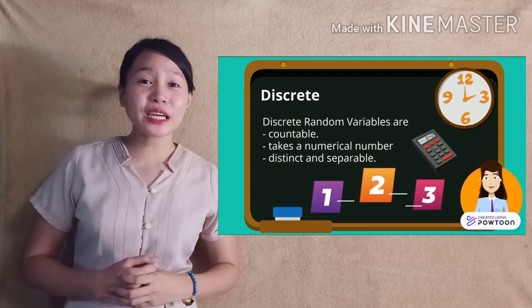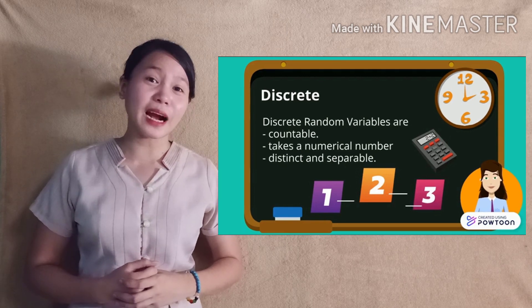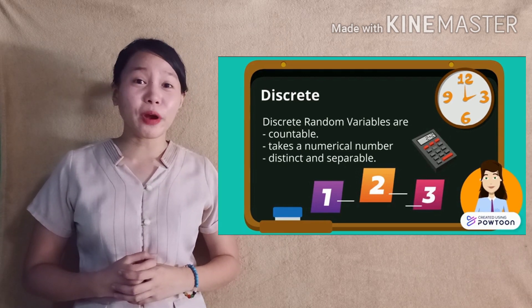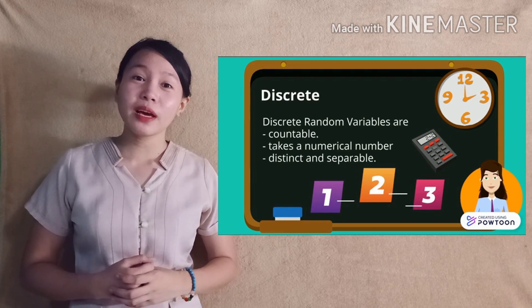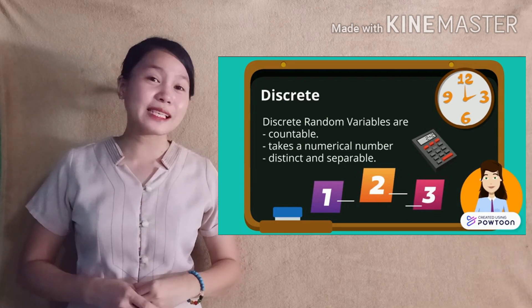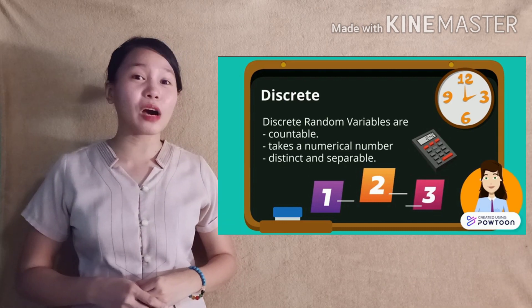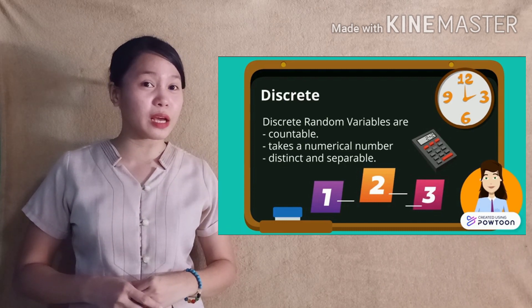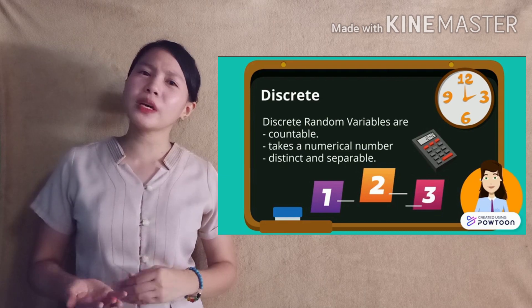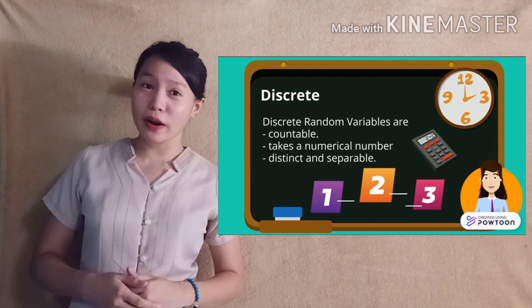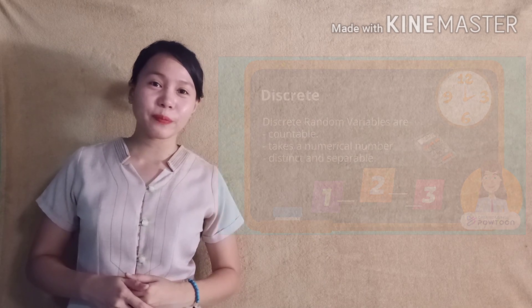Discrete random variables are countable, take a numerical value, distinct, and separable. Generally, it is a result of counting something with gaps in between. So it could be 1, 2, 3, and so on and so forth.